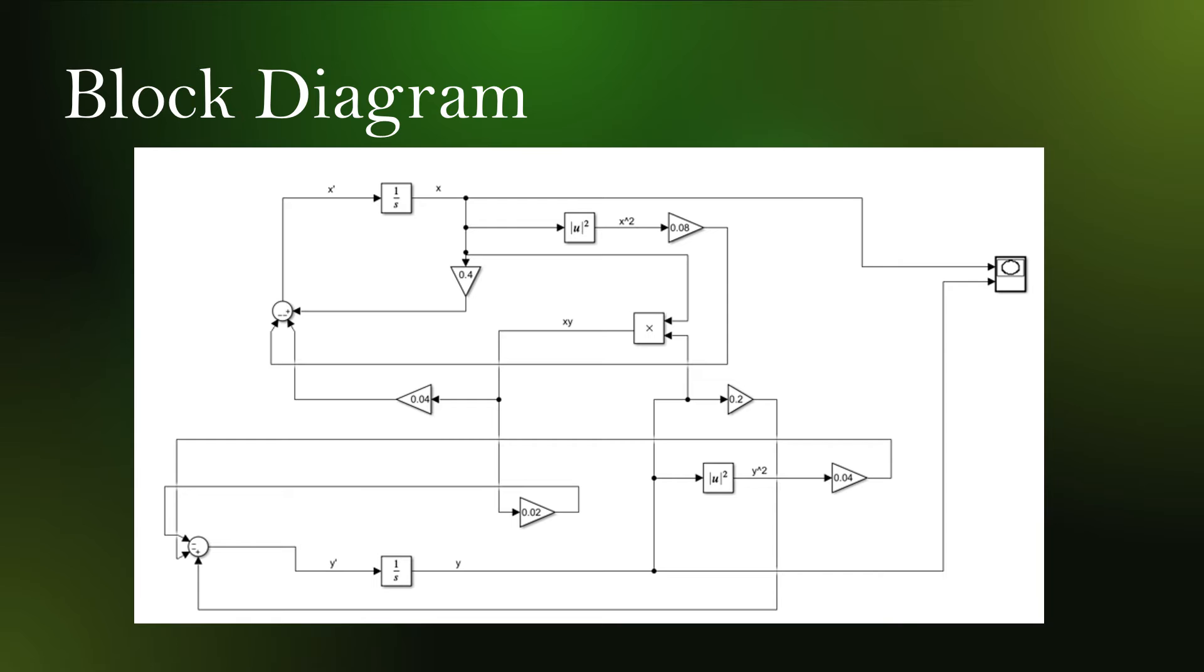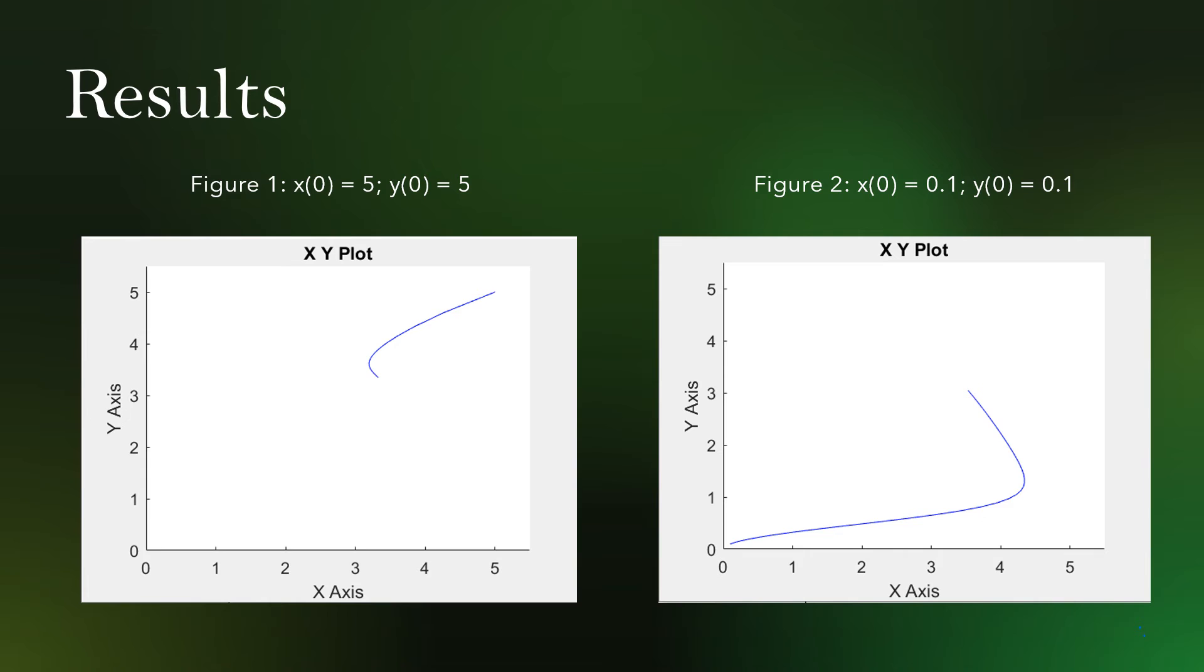Okay, so this block diagram is based on the equations from the previous slide. Note that we used an X-Y graph instead of a scope because the equations are dependent on time as well as each other. So we wanted to model how the graphs would look where you can see the populations of both tribes at the same time.